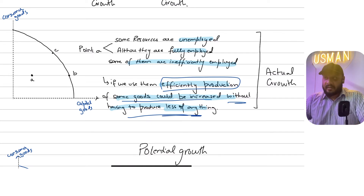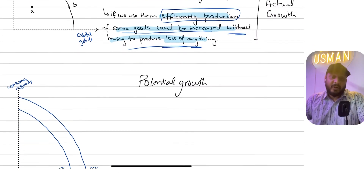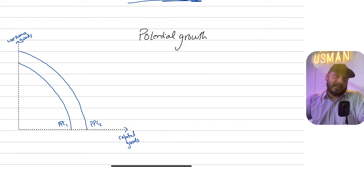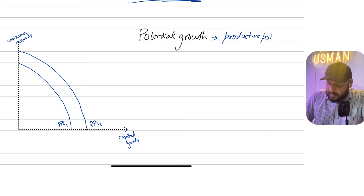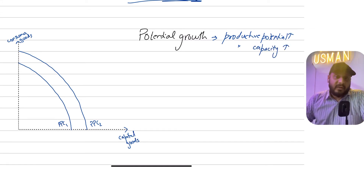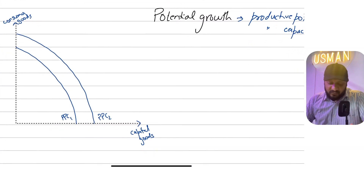If a question asks you to represent economic growth through the PPC diagram, you need to show both situations: actual growth versus potential growth. Potential growth is also economic growth, but it represents more sustained, sustainable growth that occurs due to a rise in productive capacity — when the productive potential of the economy goes up. This is represented by an outward shift of the PPC.